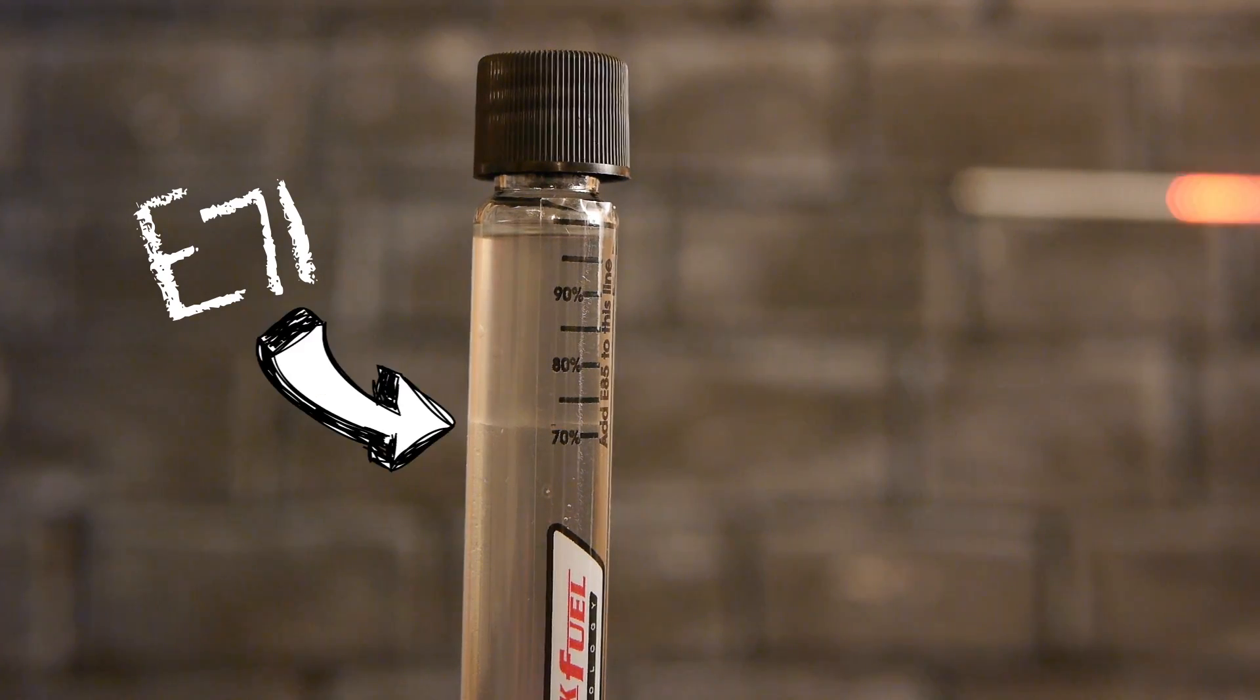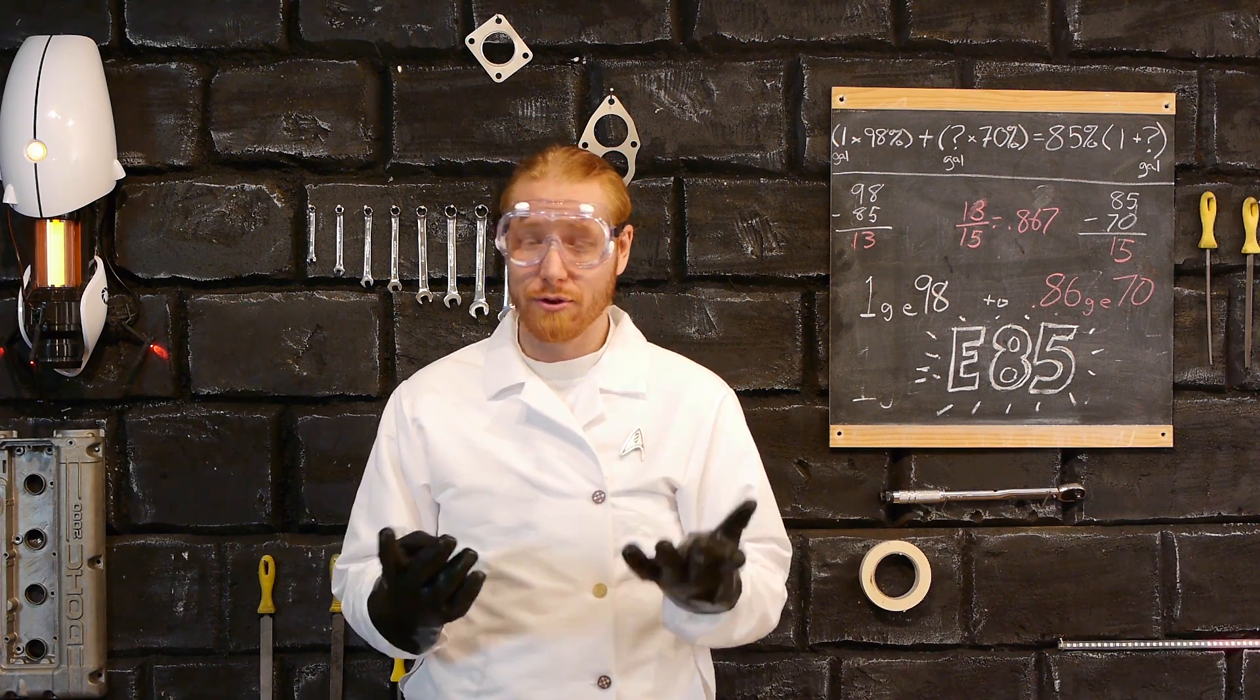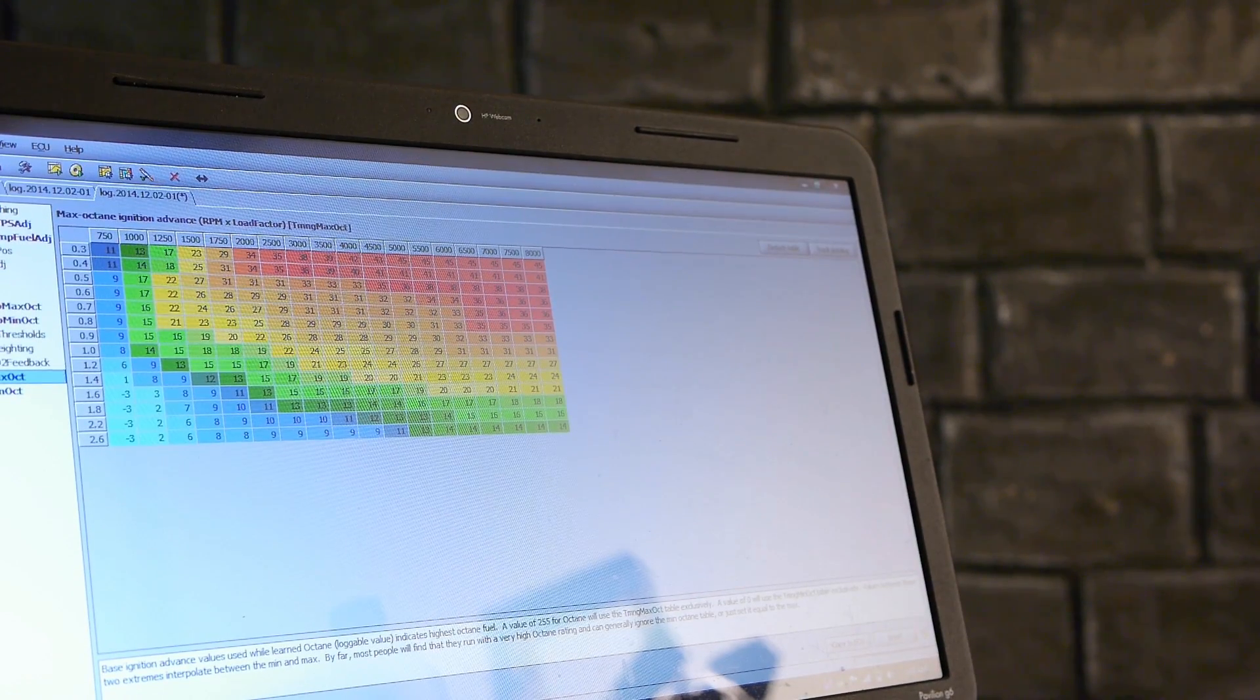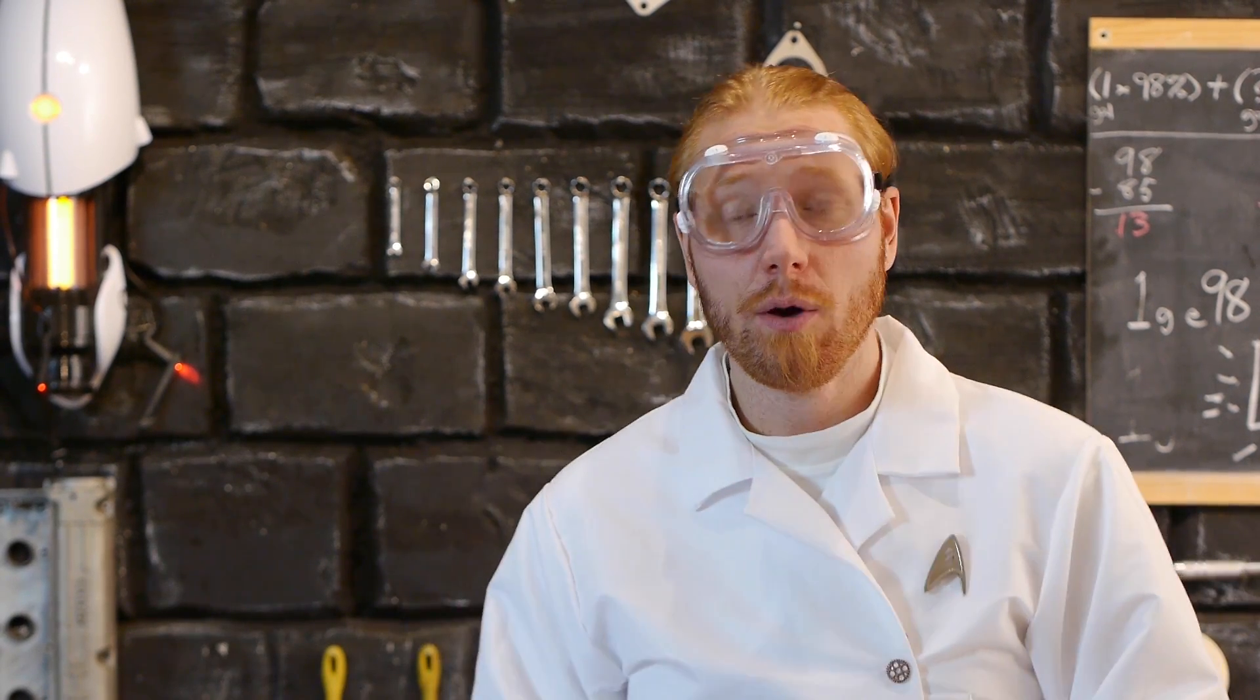The easiest thing you can do is just adjust your tune for whatever your ethanol rating is. Some tuning solutions like ECM Link, AEM, Haltech, and a bunch of others actually have flex sensors that are integrated into it and they can adjust your tune on the fly, which is awesome.